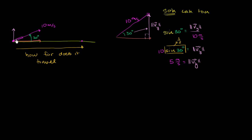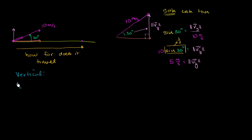If we think about just the vertical velocity, our initial velocity in the vertical direction is going to be 5 meters per second. Let me label all of this — we're dealing with the vertical here. So our initial velocity in the vertical direction is 5 meters per second.